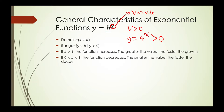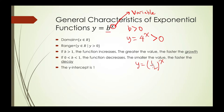And if b is between 0 and 1, so let's say we have something like y is equal to one-half to the power of x, that means that the values are getting smaller and smaller each time because we are multiplying by one-half, which means that the values keep decreasing. So this is an example of something called decay.